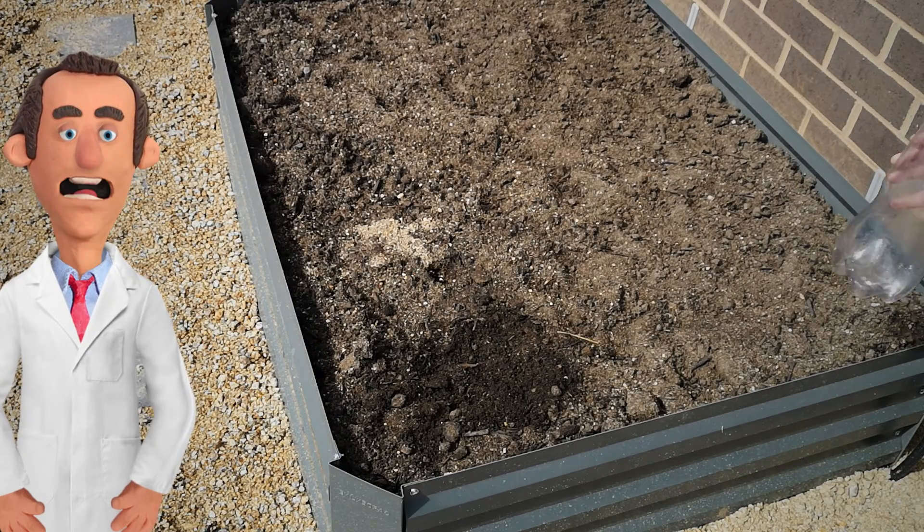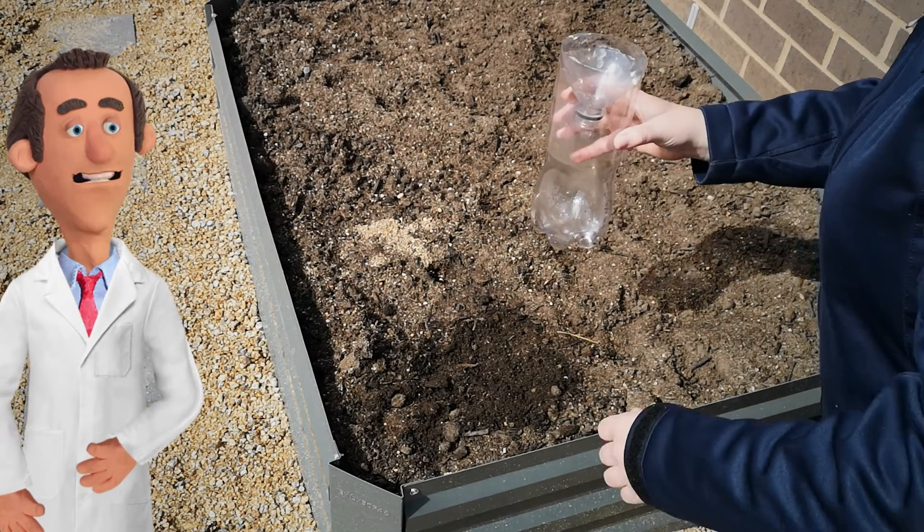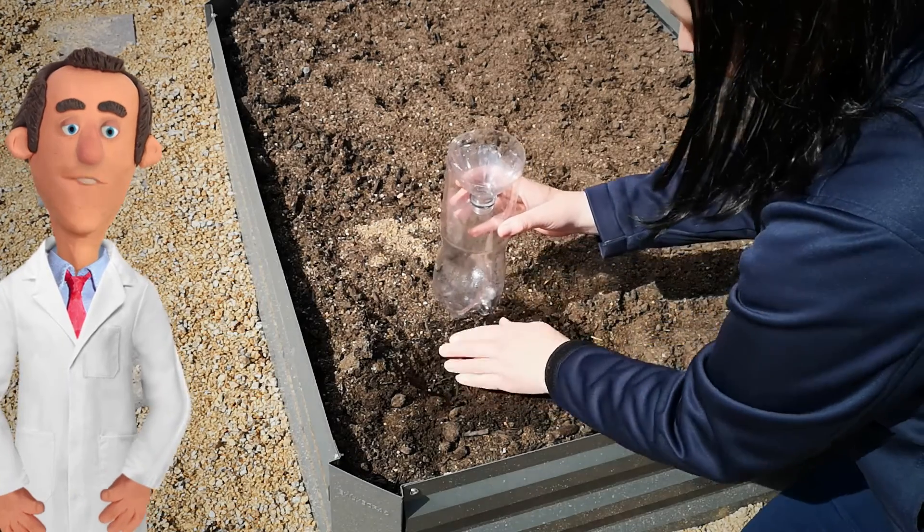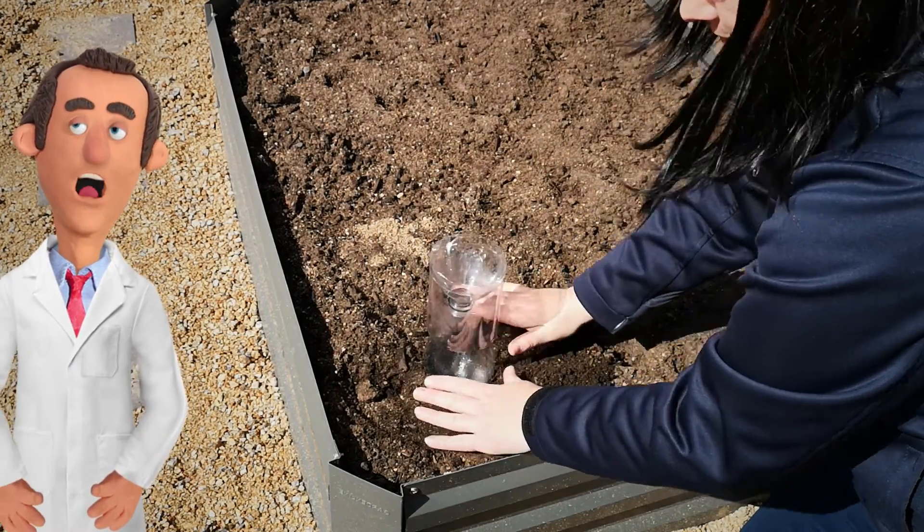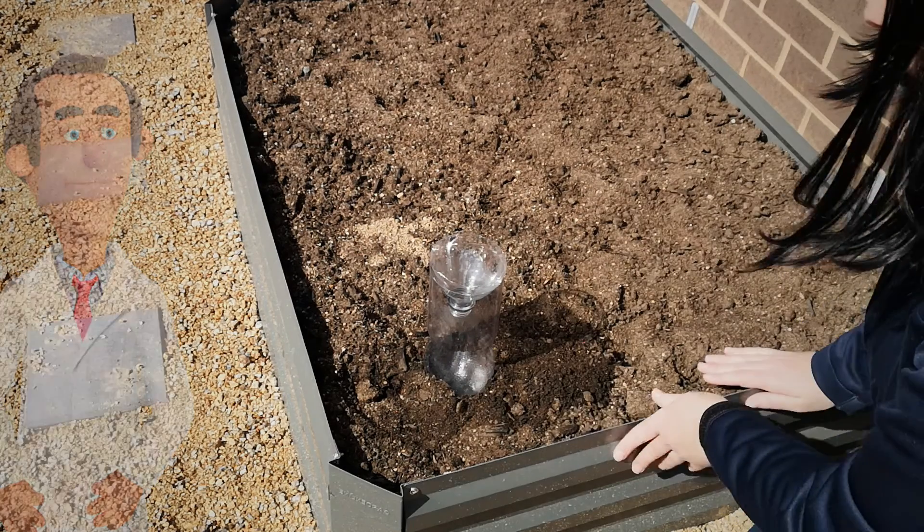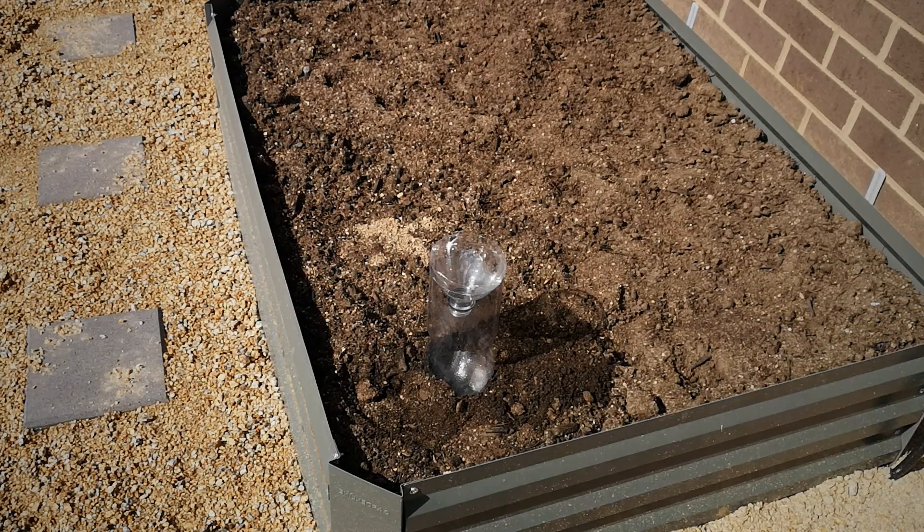When you place your rain gauge outside, make sure you pick a spot where there's nothing above it, just the sky. No trees or shelters, as this might block the rain. I've pushed our rain gauge into the dirt a little bit to make sure it doesn't blow over.